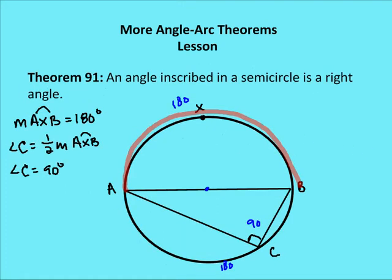Theorem 91: An angle inscribed in a semicircle is a right angle. Because inscribed angle C is going to be half the measure of the intercepted arc, which is a semicircle, the inscribed angle is going to be 90 degrees.